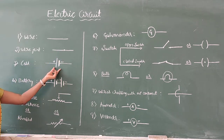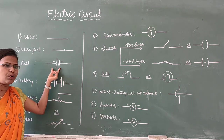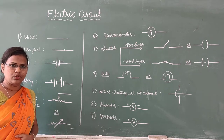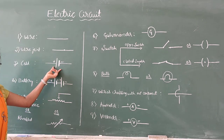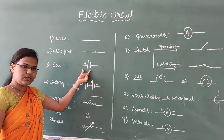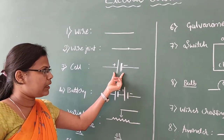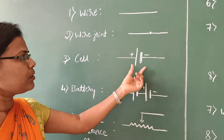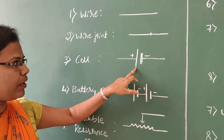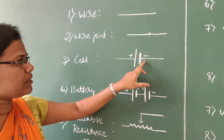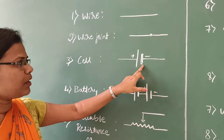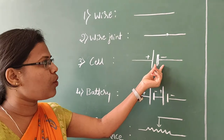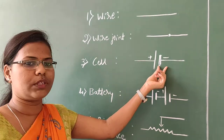The third symbol is for a cell. A cell consists of two terminals — one positive and one negative. In the symbolic representation of a cell, it consists of two parallel vertical lines. One line is long and thin, and the other is short and thick. The long terminal is considered the positive terminal, and the short terminal is the negative terminal of the cell.